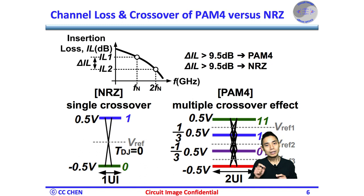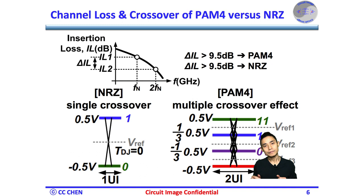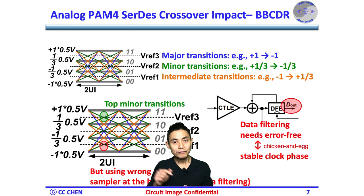Even though a transition is very sharp, if the data transition becomes slow, the jitter or eye width would degrade much more quickly in PAM4. Think about how PAM4's eye width degradation due to multiple crossovers would impact the Bang-Bang CDR's jitter performance.